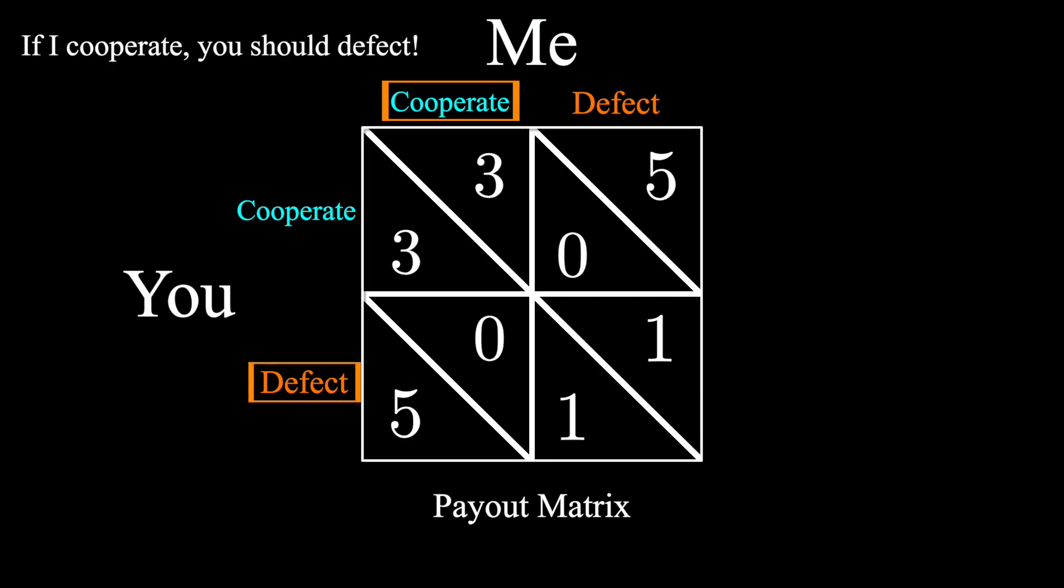Now say you know I'm going to choose to defect. What would your best move be now? Knowing I'm defecting, your payoffs are between zero if you cooperate and one if you defect. So what's the better move in this case? Defecting again—you'll simply earn more points.